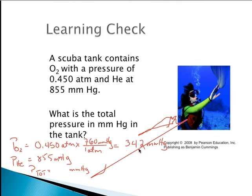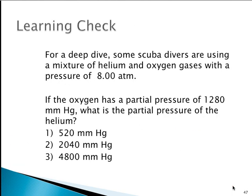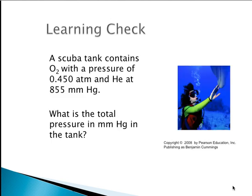That gives 342 millimeters mercury for the oxygen. Total pressure is going to be the pressure of the oxygen plus the pressure of the helium, which is 342 millimeters mercury plus 855 millimeters mercury, or 1197 millimeters mercury. We'll probably do that problem in class. That's partial pressures. Alright, thank you.